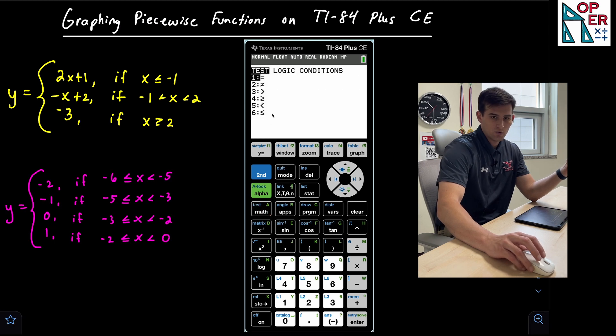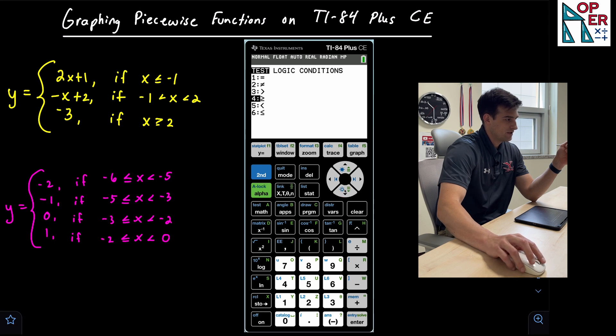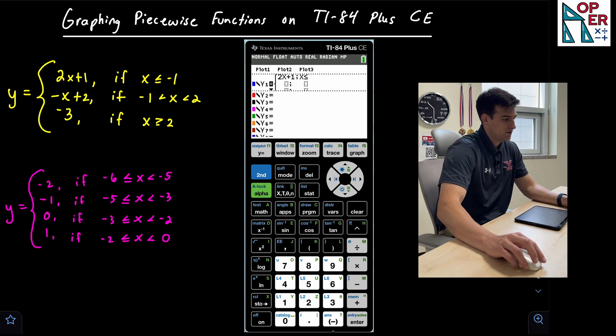And it gives us these inequality symbols here. And so we want less than or equal to, which would be the sixth option here. So we can go down to six and hit enter. And it's less than or equal to negative one. So we're done with that first piece.